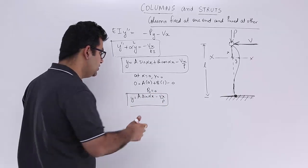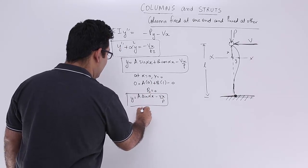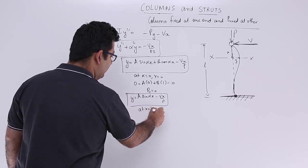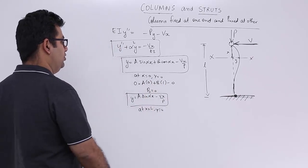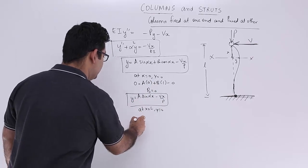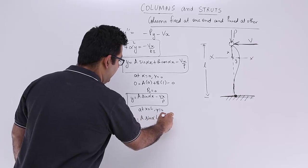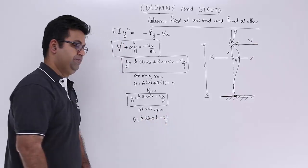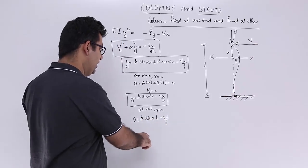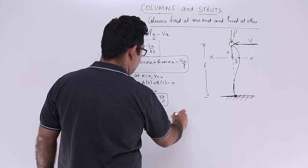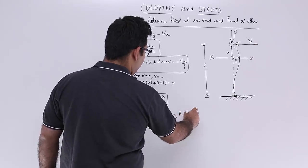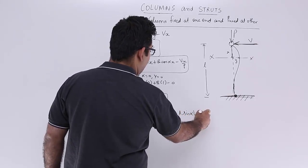Now the second boundary condition is to have at x is equal to l again y is equal to 0. So you can write down 0 is equal to a sin alpha l minus vl upon p. Okay, so from here I will get a sin alpha l is equal to vl upon p.